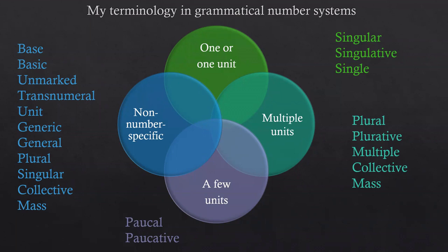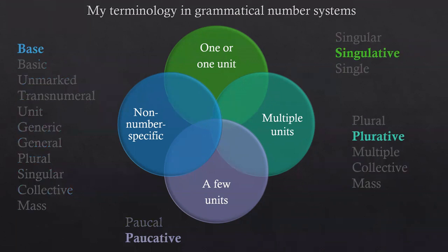This was not the main problem I was expecting, since I was looking at singulatives first. I had to find a way to determine what these forms are. One or one unit corresponds to singular, singulative, or single reference. Multiple units might be called plurals, pluratives, multiple, multiple reference, collectives, or mass nouns. A few units might be paucal or paucatives. In my first study I use: base for non-number specific; singulative for one or one unit; plurative for multiple units; and paucative for a few units.